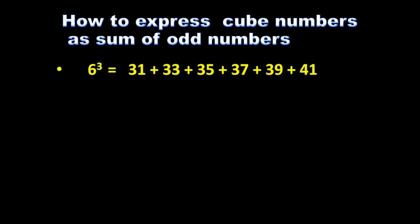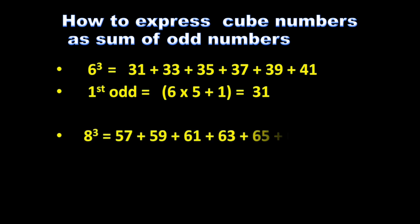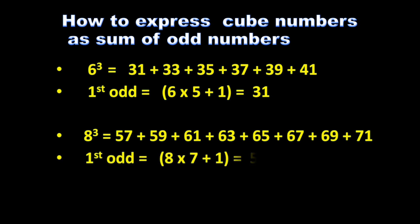For example, 6 cube starts from the 31st odd number — six fives are 30, plus 1 equals 31 — and is the sum of six consecutive odd numbers starting from 31. For 8 cube, the starting odd number is 8 × 7 + 1 = 57, so starting from 57, the sum of eight consecutive odd numbers gives 8 cube.